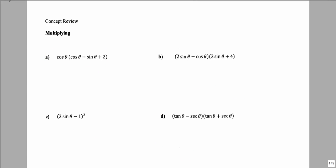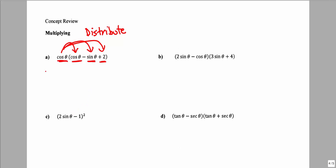Now we want to discuss multiplying trig functions. Here we have cosine theta times a quantity with three terms: cosine theta, minus sine theta, and plus 2. We distribute cosine theta times each of the three terms. It's important to remember we are not multiplying the thetas together, and a trig function is never separated from its input. So cosine theta times cosine theta gives cosine squared theta.